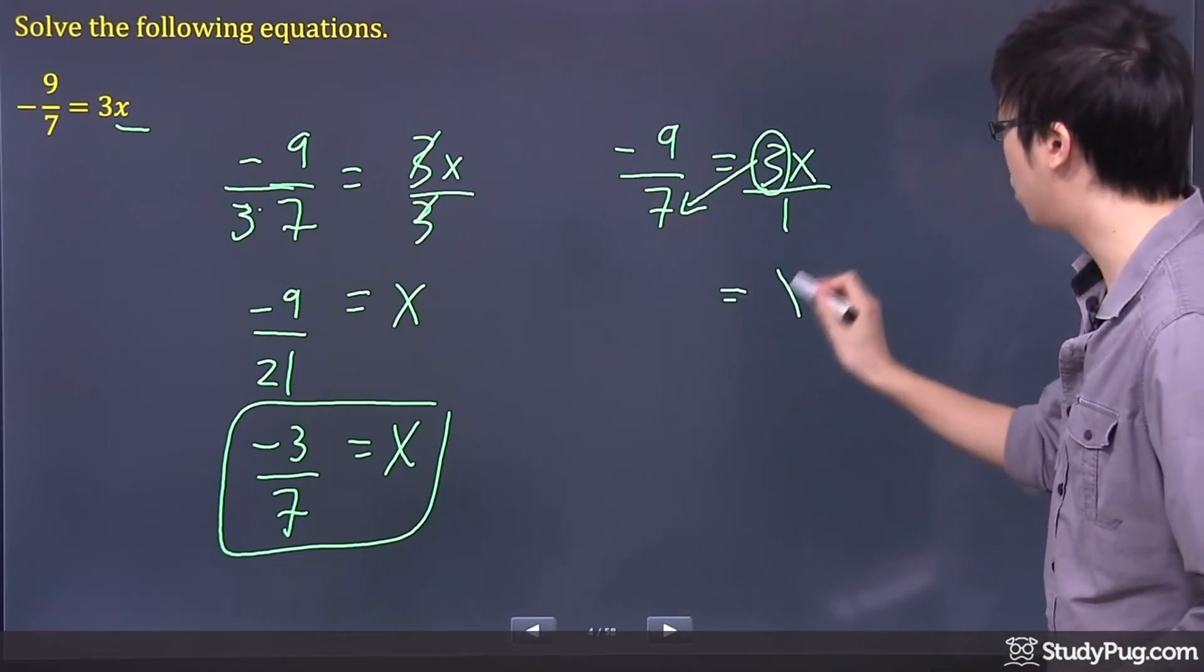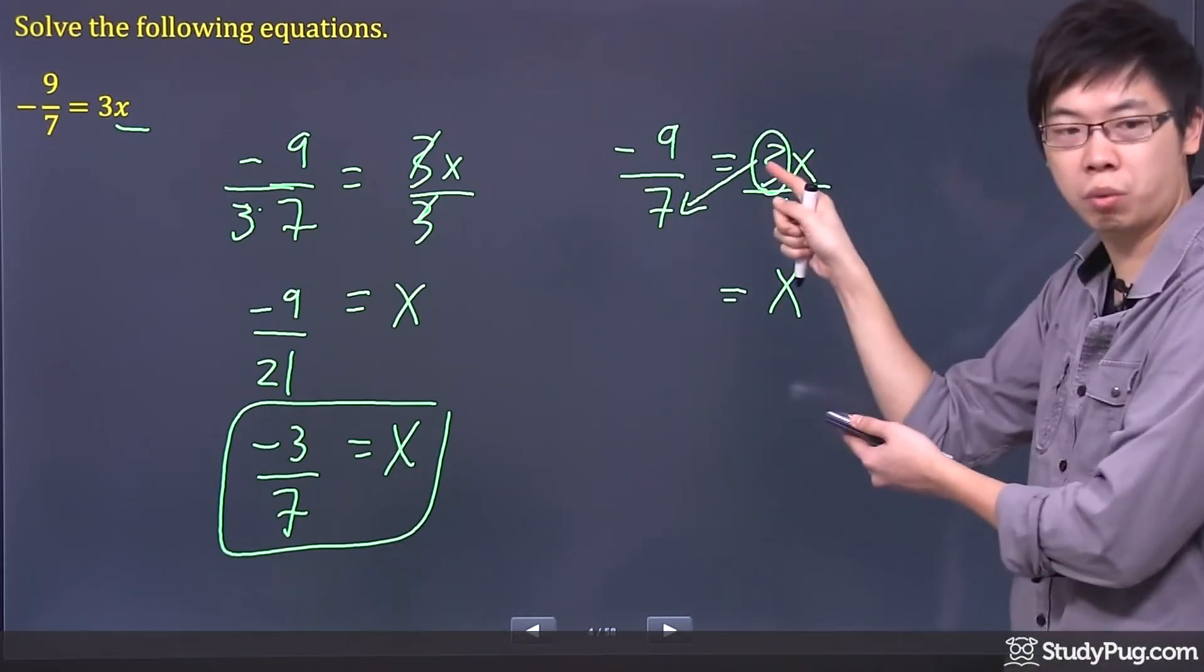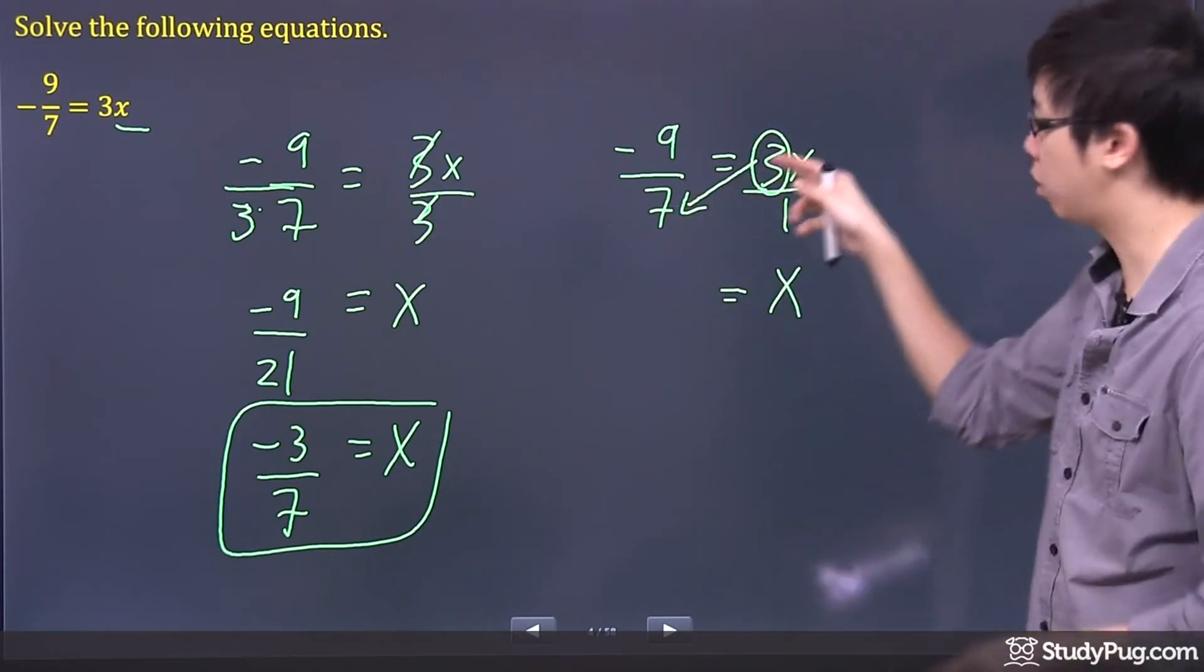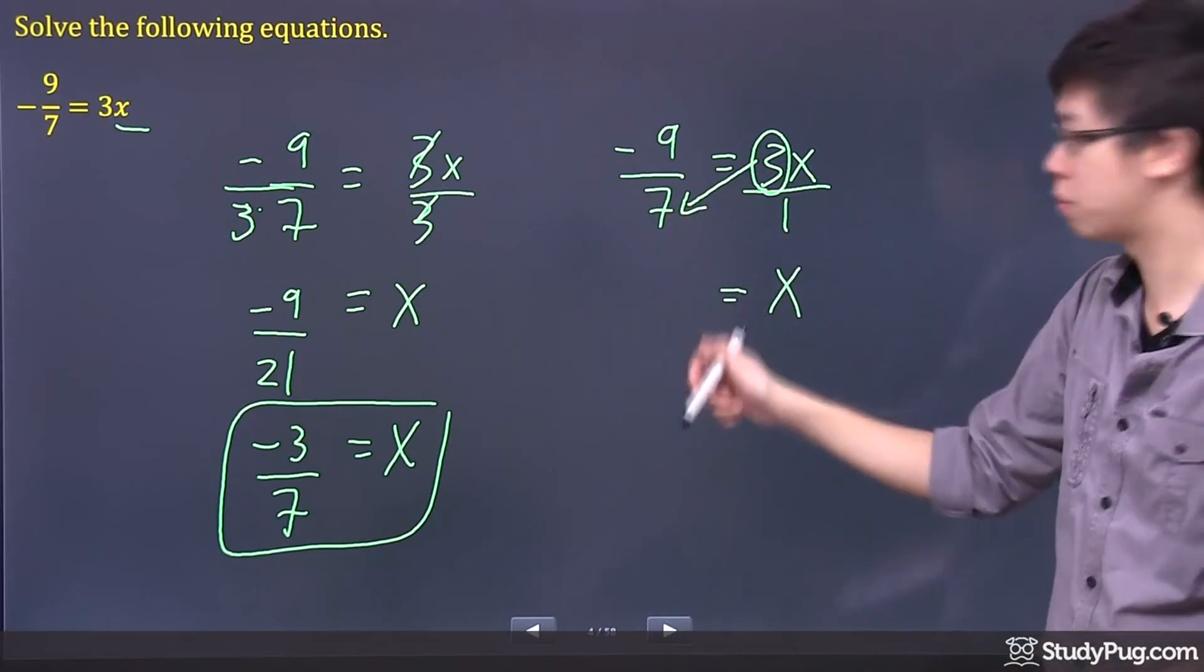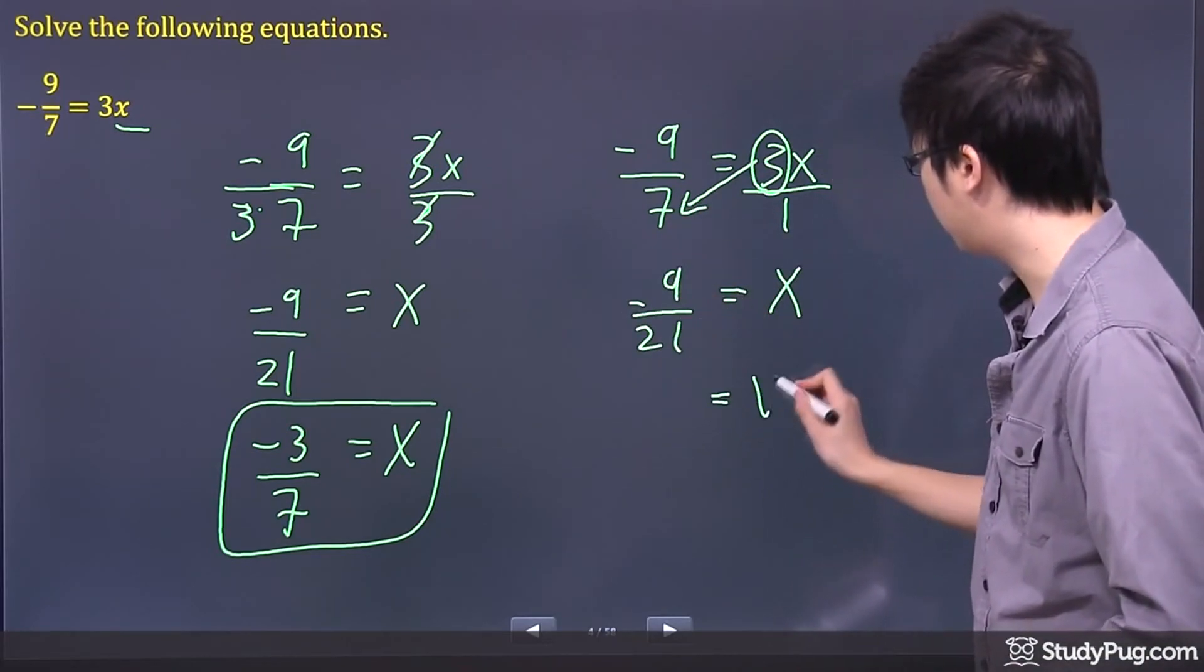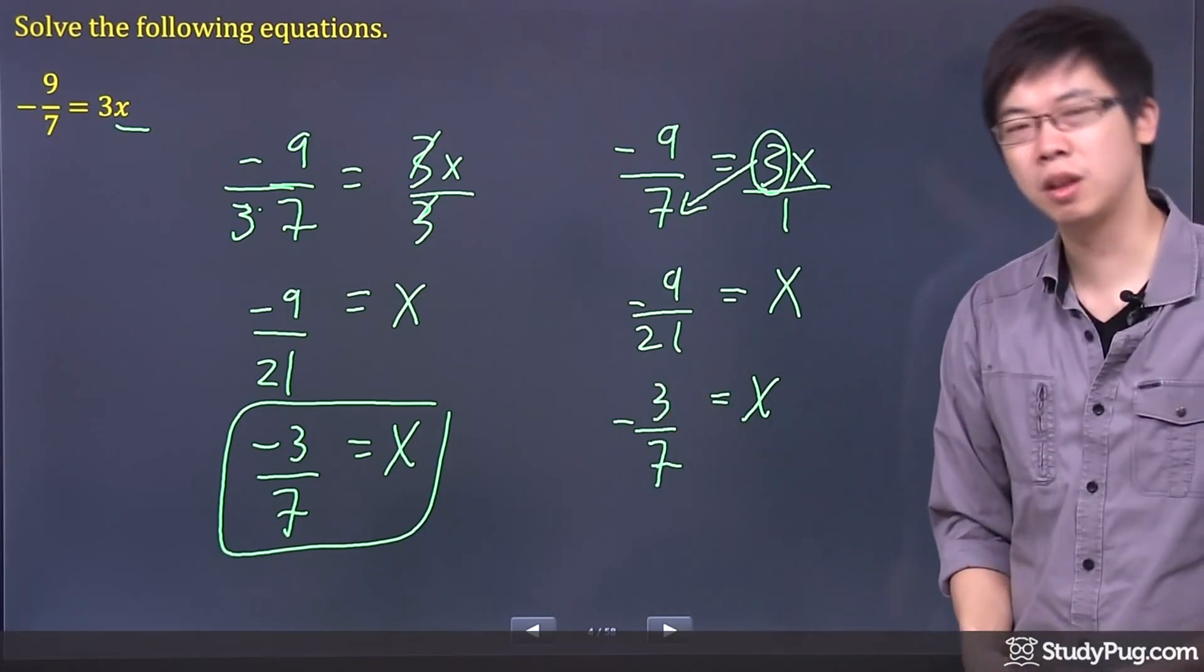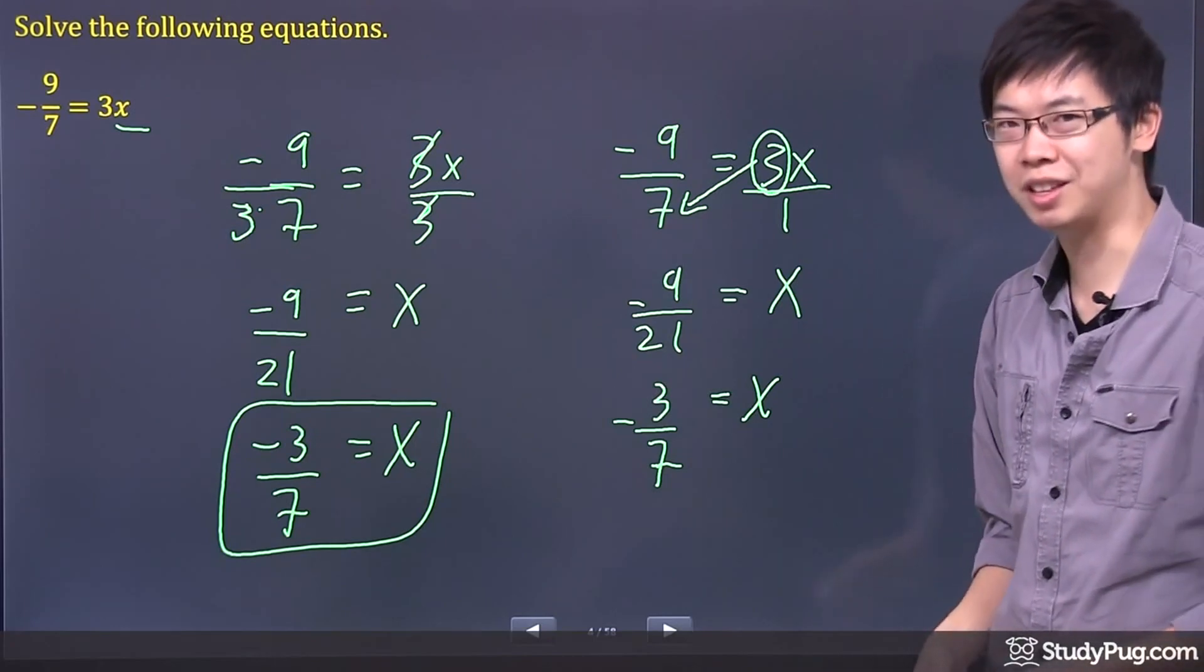But again, remember, you want to keep the x by itself. So we're not going to touch the x, we're just going to move the 3 down this way. So the 3 will be multiplied to the 7. So you're going to end up with exactly the same number and exactly the same answer, which is negative 3 over 7. Just two different methods for you to choose from. Thanks so much.